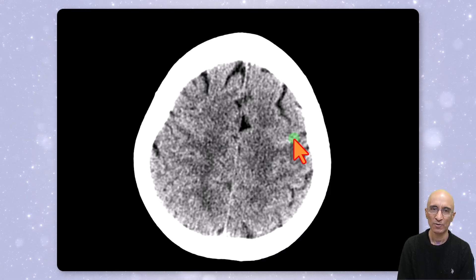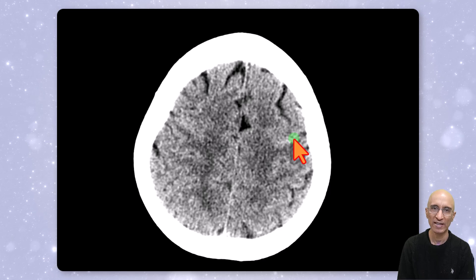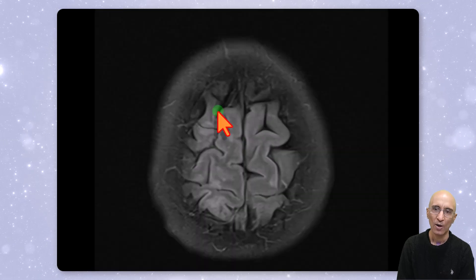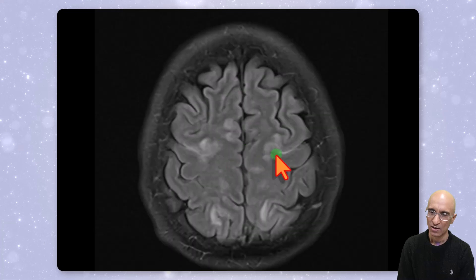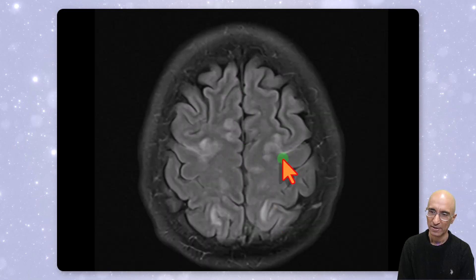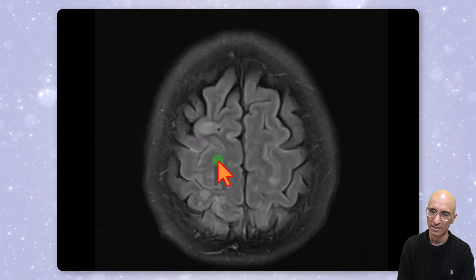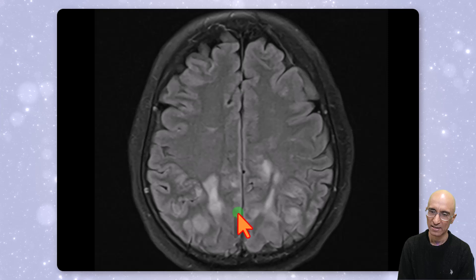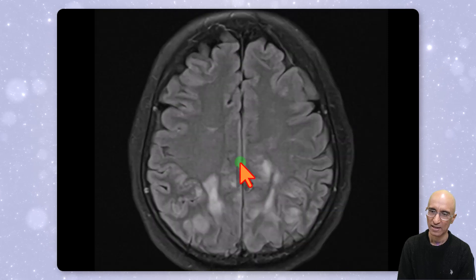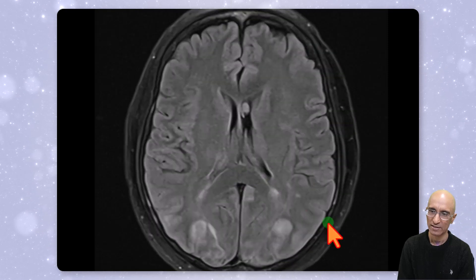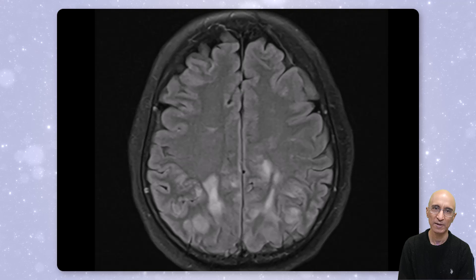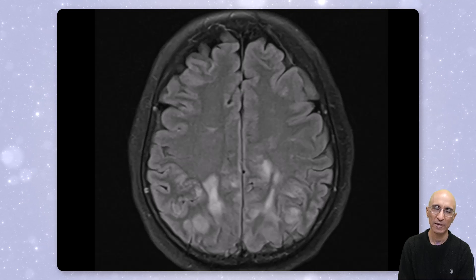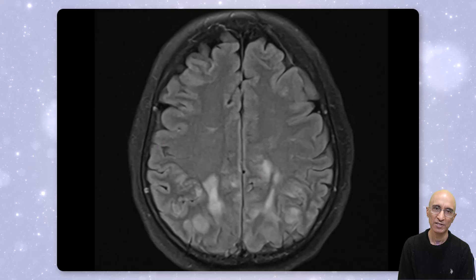As part of the workup, she also underwent an MRI brain examination. On the axial FLAIR MRI images, we can see cortical and subcortical hyperintensities in bilateral parietal, occipital, and frontal regions. This finding is concerning for posterior reversible encephalopathy syndrome (PRES), given the patient's high blood pressure and known history of hypertension.